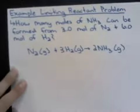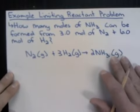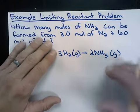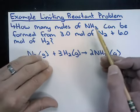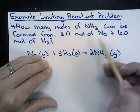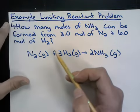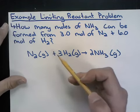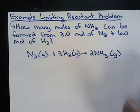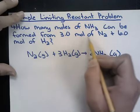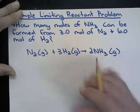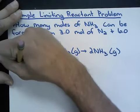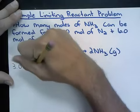Let's transition to an example problem on limiting reactants. The question asks: how many moles of NH3 (ammonia) can be formed from 3 moles of nitrogen N2 and 6 moles of hydrogen H2? We start with the first value given, which is 3 moles of N2.